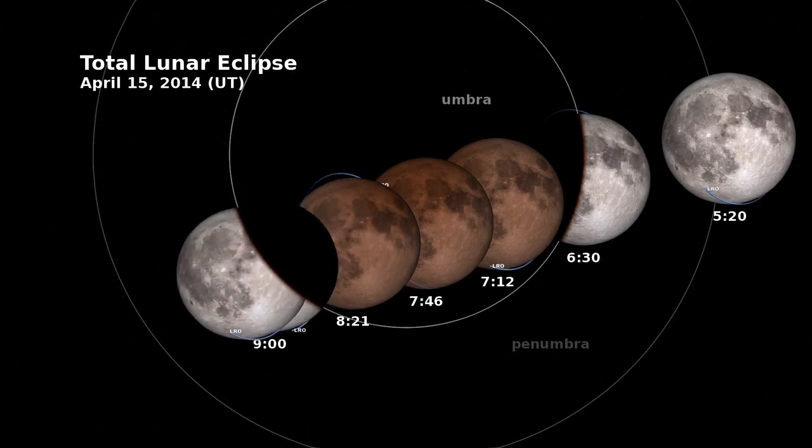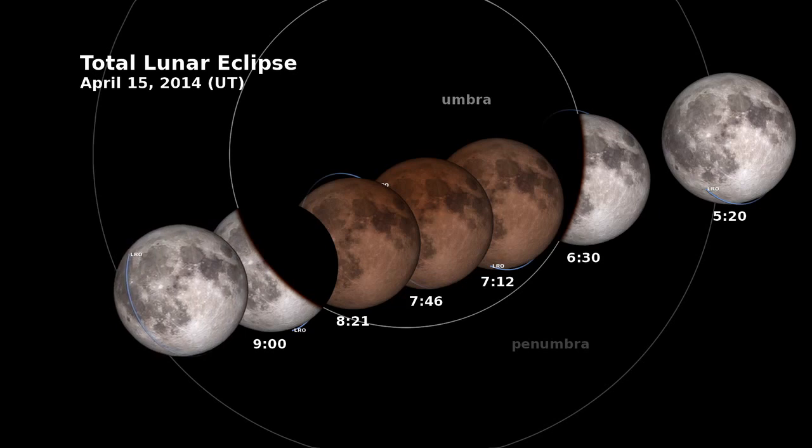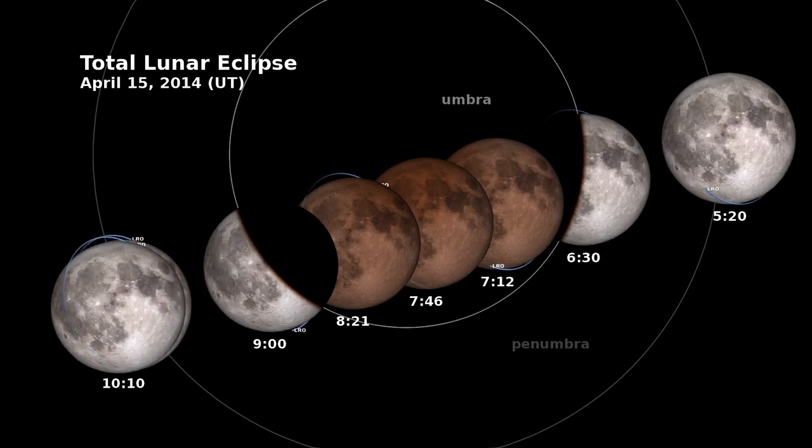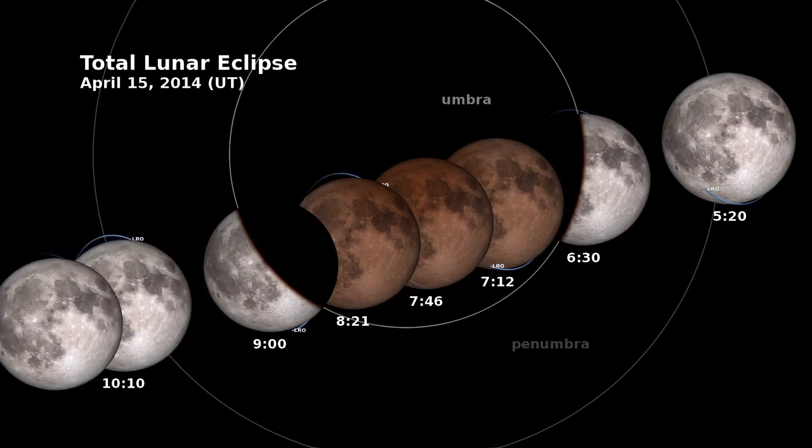When the moon comes out of the Earth's umbra, it begins to look, as we've always seen it, this beautiful bright gray orb in the sky.